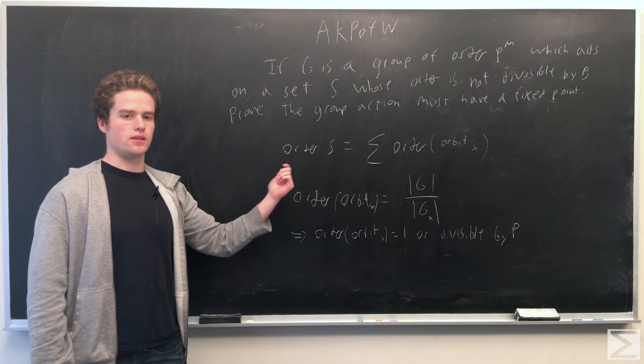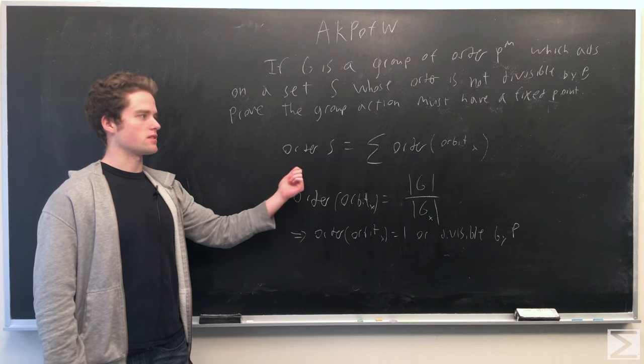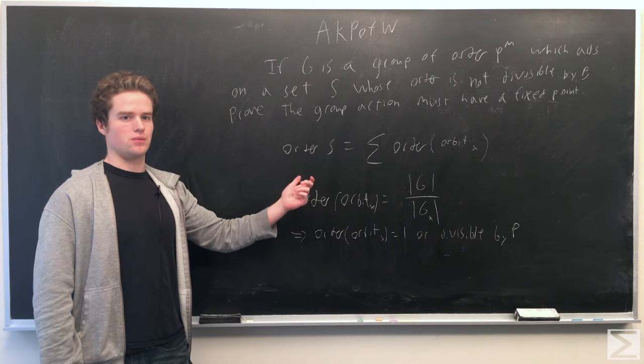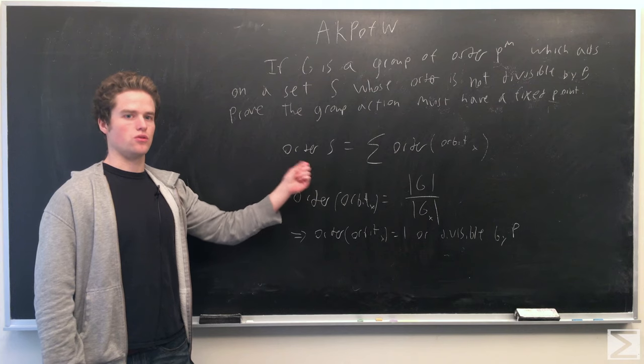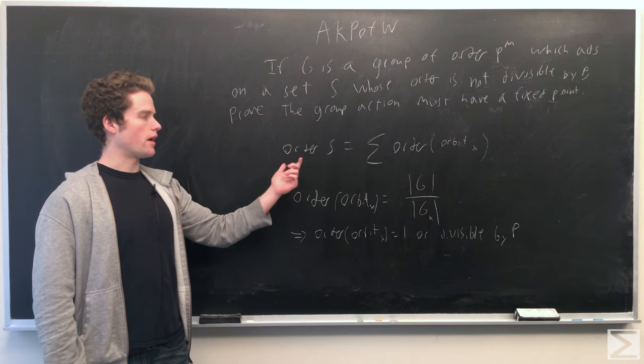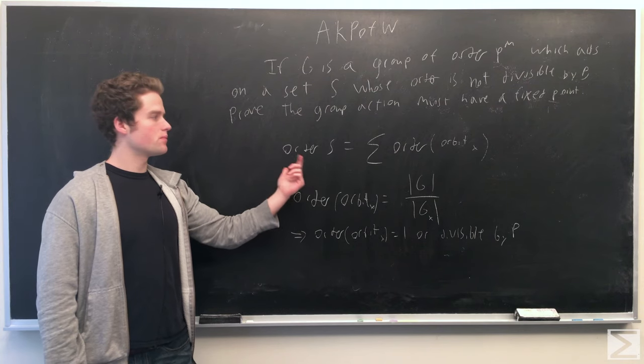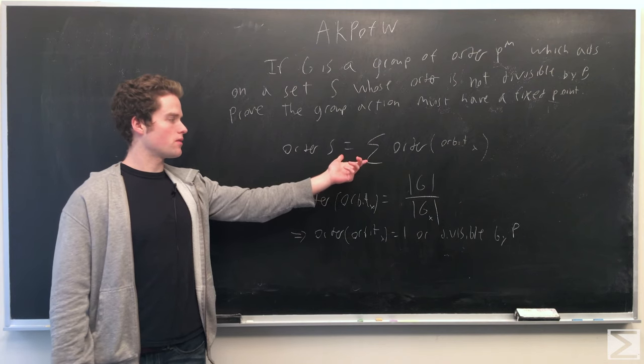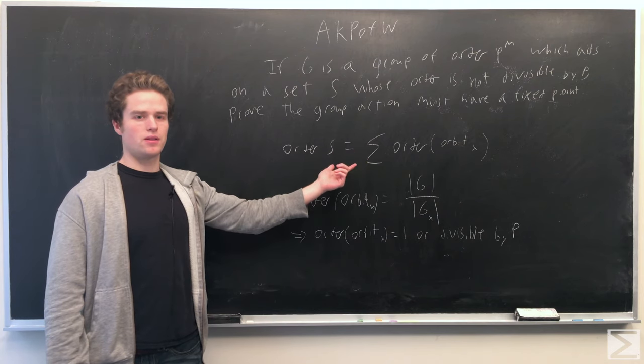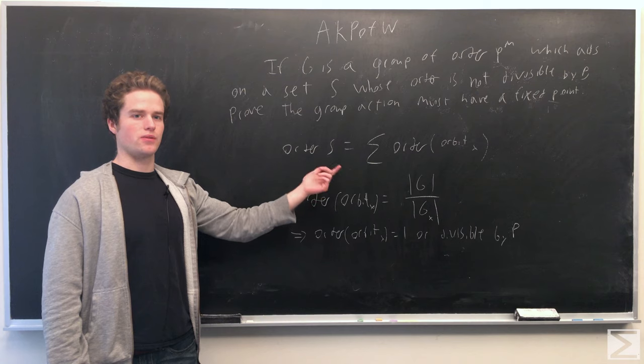So we can take some g in G, such that gx equals y. That means we can take some g2, such that g2y equals x. So the elements in the orbit of an element, we can show that's an equivalence class.